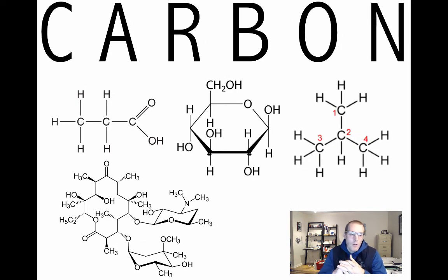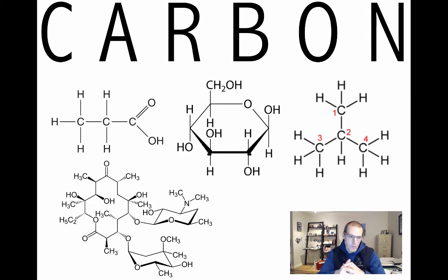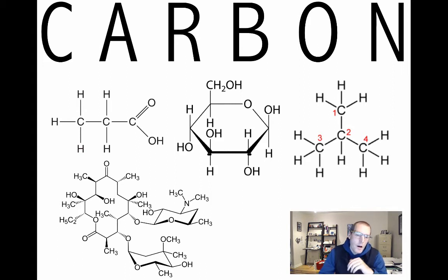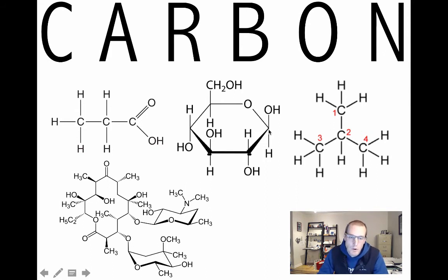Let's look at some arrangements of carbon-containing molecules. Top left is propionic acid — a simple chain of carbons with other atoms covalently bound to it, showing you can make chains with carbon. In the middle is glucose, the central molecule in biology. Where all the lines come together, those are carbon atoms. Glucose has six carbons arranged in a ring — another architecture you can make using carbon.